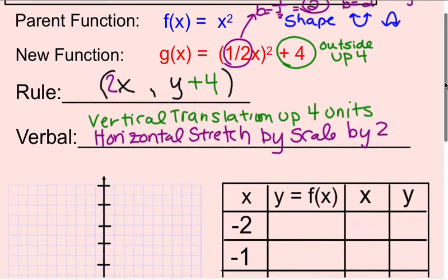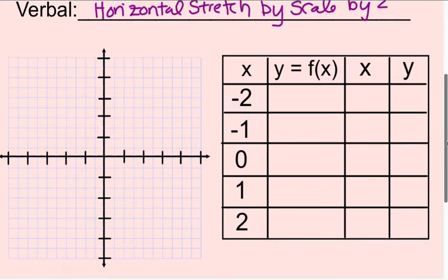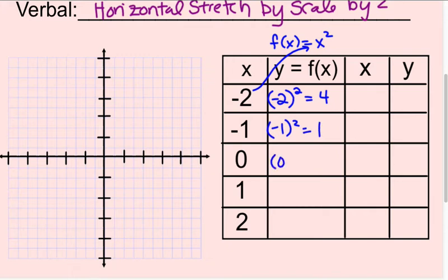All right. Now let's go down and graph our parent function. So our parent function is f(x) equals x squared. And we're going to use the same five values we've been using in our last couple of examples. So we're going to evaluate the function. So we're substituting in for x. So negative 2 squared is 4. Negative 1 squared is 1. 0 squared is 0. 1 squared is 1. 2 squared is 4.